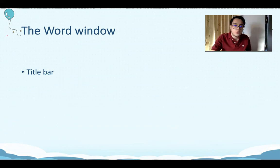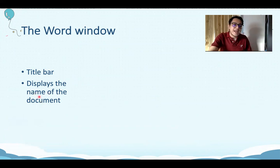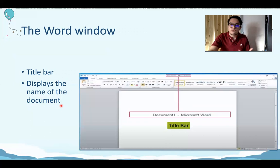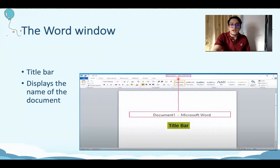Let's talk more about the Word window. First, we have the title bar. What does the title bar do? The title bar displays the name of the document. So it shows the name of your file, your paper. So this is Word, and here is your title bar right on the top. So this is a zoom in on that. The name of the file is Document 1, Microsoft Word. So this is your title bar — it's right in the middle.